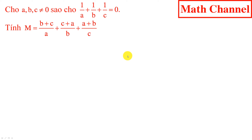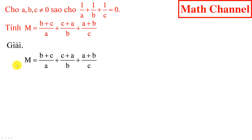Bài toán. Chúng ta cùng đi vào giải bài toán này. Quan sát biểu thức M, ta thấy đây là một tổng của 3 phân thức. Trong đó, mỗi phân thức đều có sự có mặt của 3 số A, B và C.